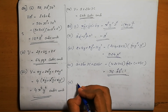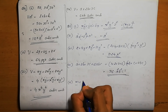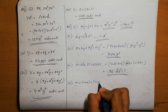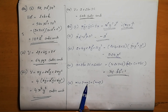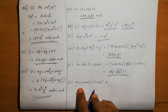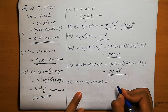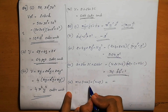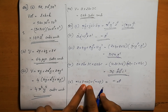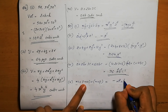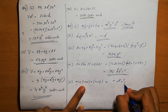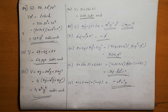Fifth one: m into minus mn into mnp. Only one minus, so the answer is in terms of minus. m into m into m is m cube. n into n is n square. Then p. So the answer is minus m cube n square p.